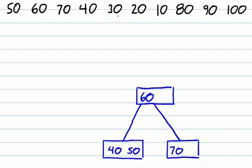The next value we insert, 30, is also less than 60, so we're also going to try to insert it into the same leaf node. However, in this case, there's not room for it. So we're going to need to take the middle of the three values and push it up to the parent. The parent only contains one value, so we don't need to perform a split like we did before.